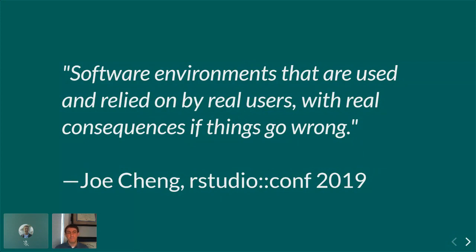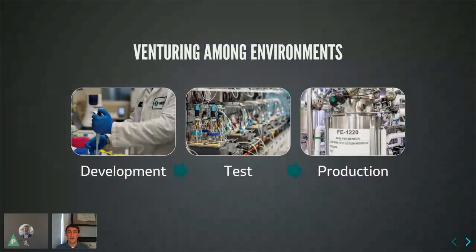It has real outcomes in the real world. To achieve that, it's much more than your code — it's a production environment. This implies there may be other environments: you may have QC, test, and prod. The idea is you separate your environments, and as you move from development to production, things become more stable, more tested, and more controlled.